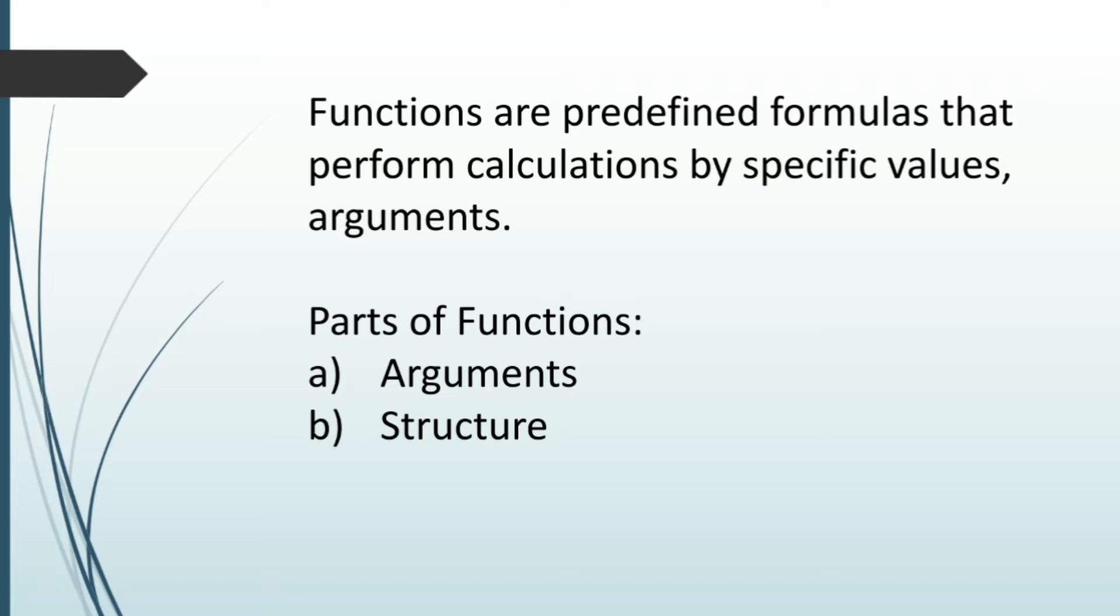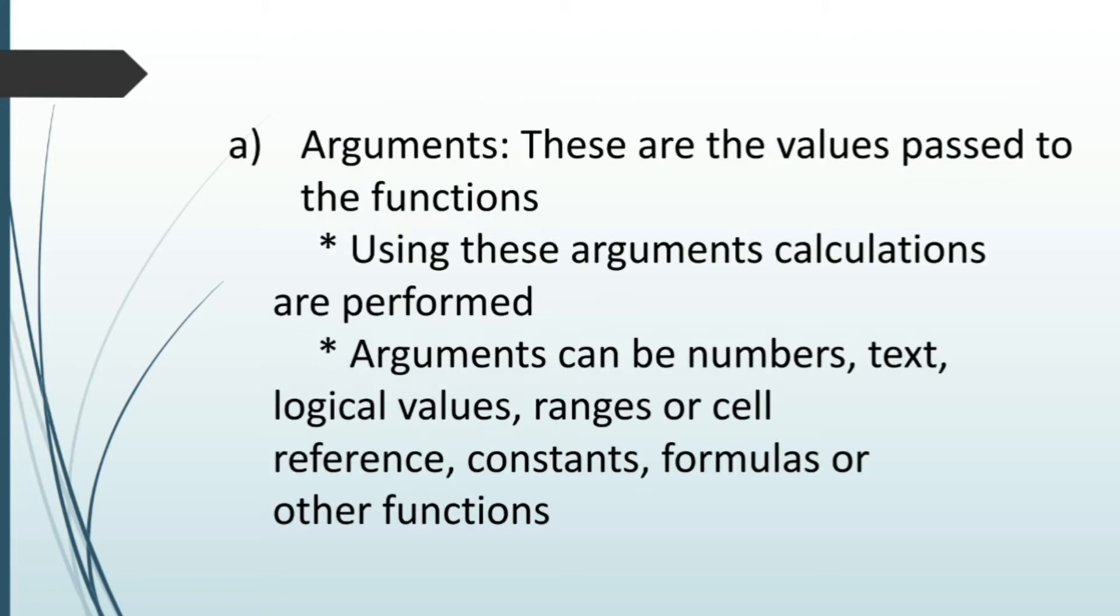So the values which we pass to the function are called as arguments and the value returned by the function is called as return value. In our example, sum 6,8, 6 and 8 are the arguments and 14 is the return value. The parts of the function are arguments and structure. Arguments are the values passed to the functions. Using these arguments, calculations are performed by the function.